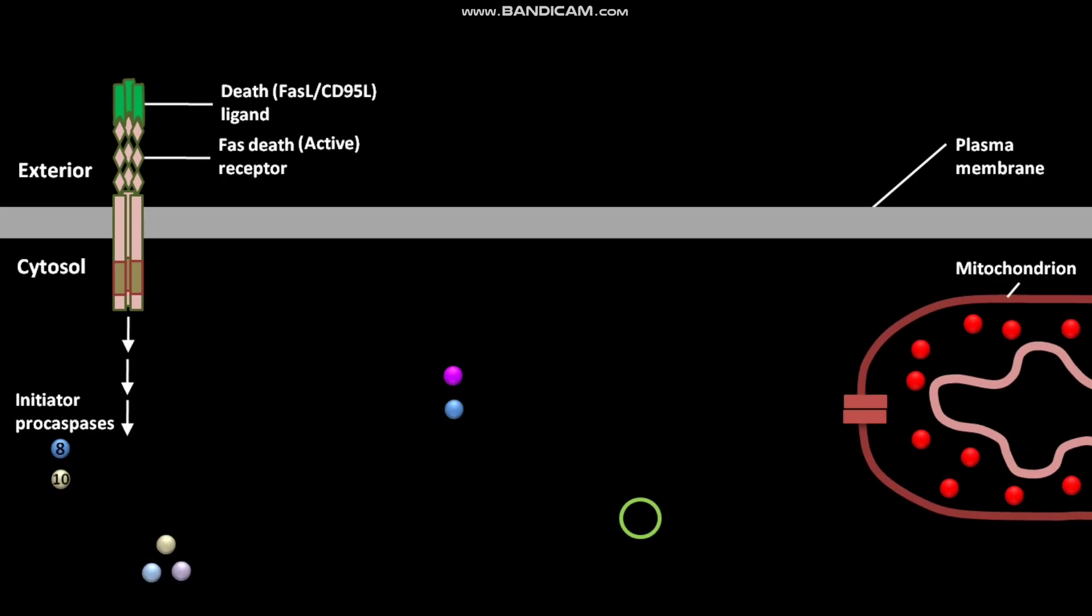As a result, procaspase-8 forms active caspase-8 and procaspase-10 forms active caspase-10. The cytosolic inactive executioner procaspases are then cleaved and form active executioner caspases.